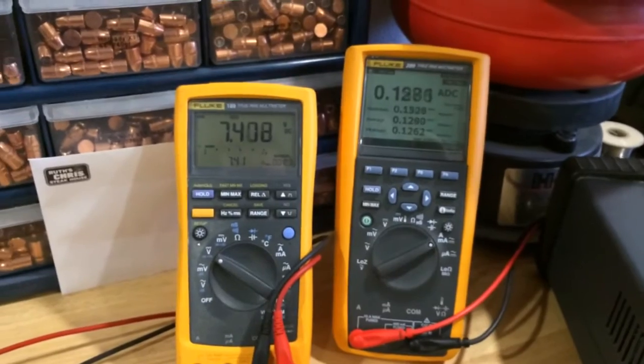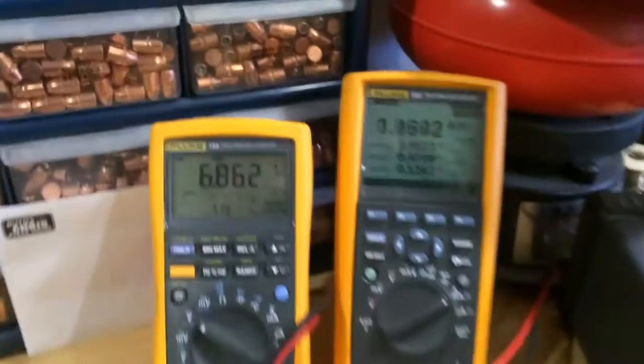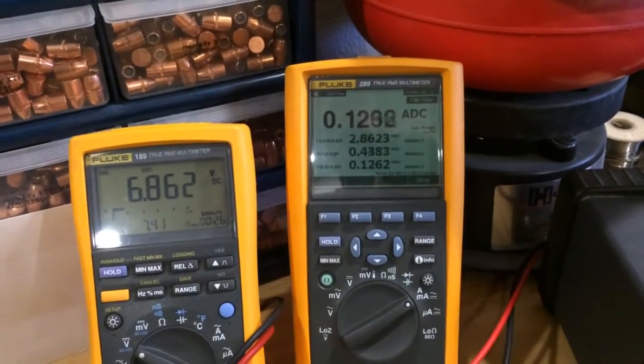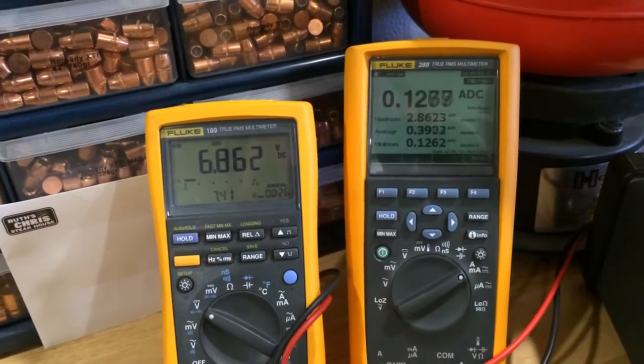So, just moving a few of the servos around, you can see that we've already spiked up to almost 3 amps, 2.8 amps. And our voltage has dropped to 6.8 volts.